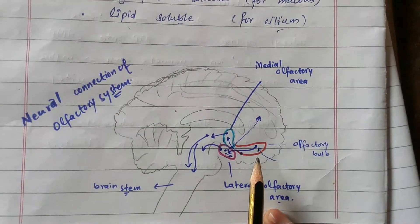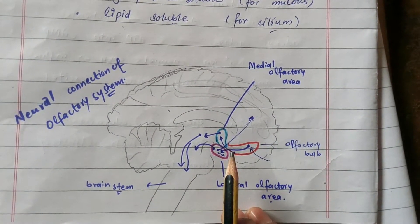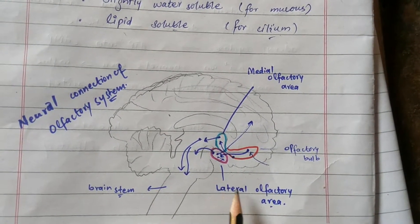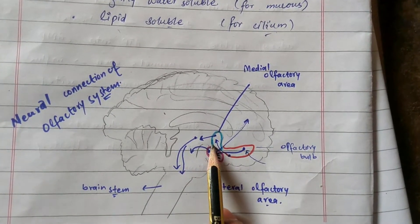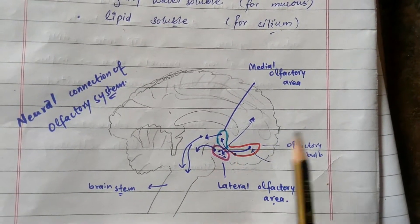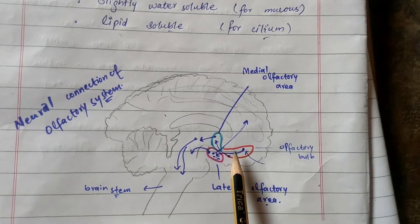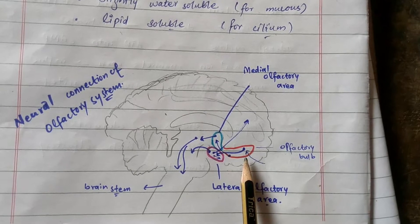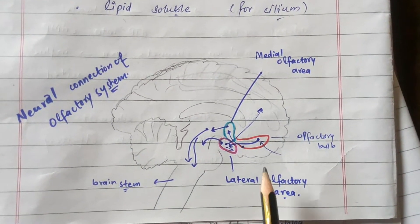Once the olfactory cells are excited, the electrical signals are sent to the olfactory tract by the olfactory nerve fibers. Then the olfactory tract enters the brain and divides into the medial and lateral olfactory areas. The olfactory tract is basically the anterior outgrowth of the brain tissue from the base of the brain.